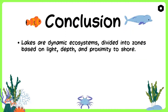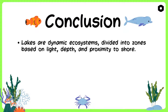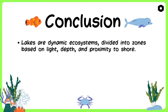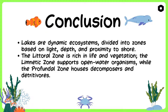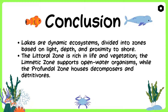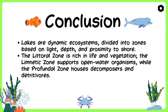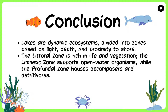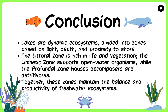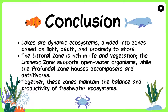Conclusion: Lakes are dynamic ecosystems divided into zones based on light, depth, and proximity to shore. The littoral zone is rich in life and vegetation. The limetic zone supports open water organisms, while the profundal zone houses decomposers and detritivores. Together, these zones maintain the balance and productivity of freshwater ecosystems.